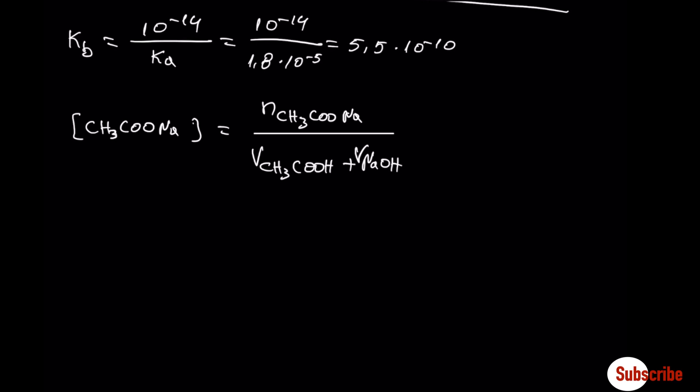The concentration of the salt is the number of moles of the salt divided by the volume of the acetic acid plus the volume of sodium hydroxide added to the solution to neutralize the acid. Let's build a small table that deals with moles.